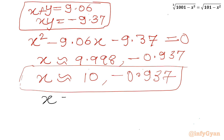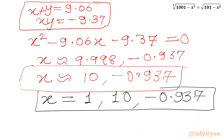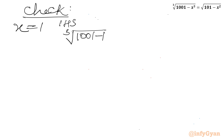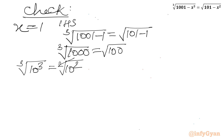x will be equal to 1, 10, and negative 0.937. Let us verify. For x equal to 1: LHS is cube root of (1001 minus 1 cube) equals cube root of 1000, and RHS is square root of (101 minus 1 square) equals square root of 100. So cube root of 10 cube equals square root of 10 square, giving 10 equals 10. Hence verified.